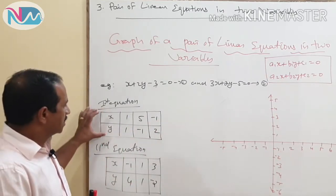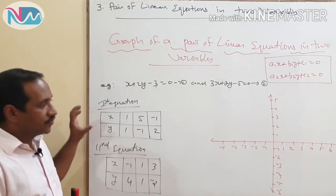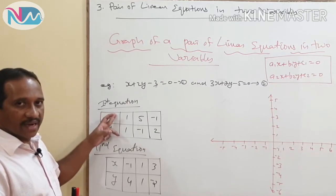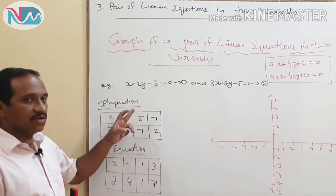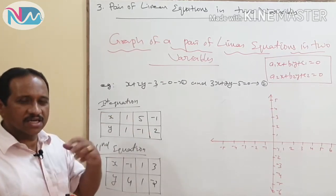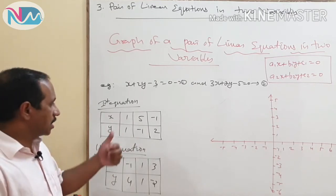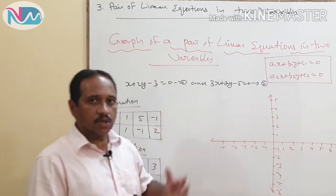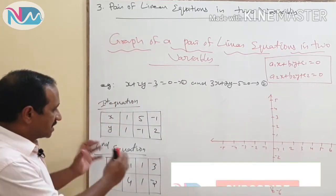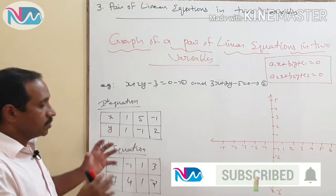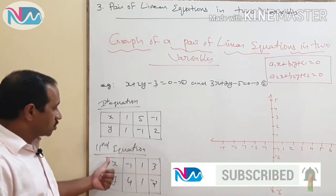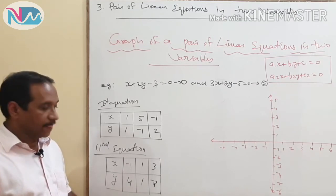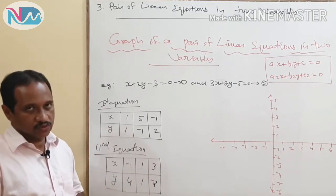In this table, I have written a few solutions of the first equation. The values of x are 1, 5, and minus 1, and the respective values of y are 1, minus 1, and 2. Similarly, for the second equation, we have a table with solutions: x and y values are respectively minus 1 and 4, 1 and 1, and 3 and minus 2.